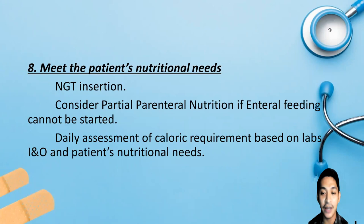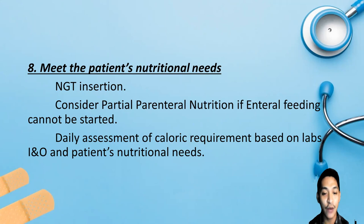The eighth care essential is meeting the patient's nutritional needs. For optimal outcomes, ventilator patients must be well nourished and should begin nutrition early. Since they cannot swallow normally, they need an alternative nutrition route — preferably a feeding tube like an NGT with liquid nutrition. If enteral feeding is not possible, the healthcare team will consider parenteral nutrition. Patients with tracheostomy tubes may be able to swallow food; however, follow physician orders and consult speech and respiratory therapies. Assess daily caloric requirements based on labs, intake and output, and the patient's nutritional needs.